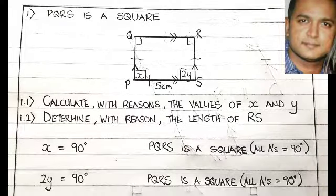Now let's look at 2y. The entire angle of 2y is equal to 90 degrees. So we write that 2y equals 90 degrees, with the reason that PQRS is a square and all angles are equal.